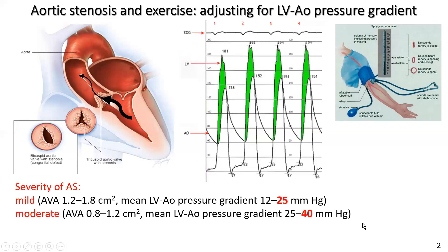Moderate disease is quite easy to understand using the same approach. The aortic valve area is 0.8 to 1.2 centimetres squared, and the mean left ventricular aorta pressure gradient is 25 to 40. If you don't know the pressure gradient but know the person has moderate disease, add 40. If you do know the pressure gradient, you can add the actual value to brachial artery pressure. For example, if brachial artery pressure is 140 and the gradient is known to be 30, you add 30, making left ventricular systolic pressure 170. You can then exercise up to a brachial pressure of 220, because adding 30 gets you to 250. However, if you didn't know the gradient was 30, you would assume the larger number and add 40.